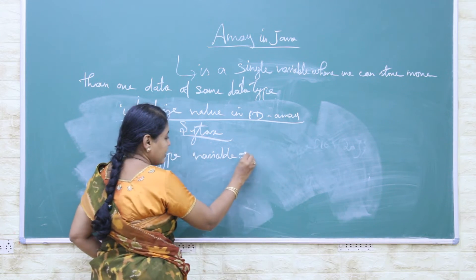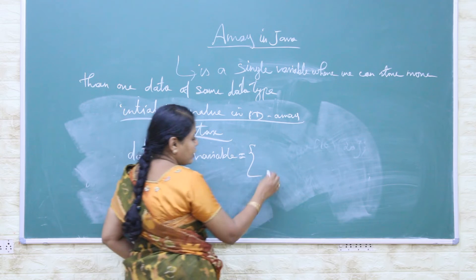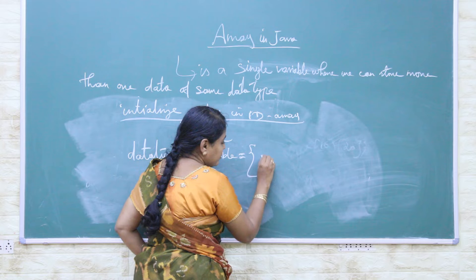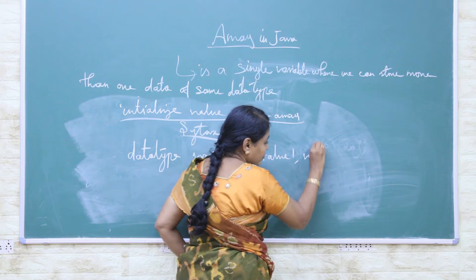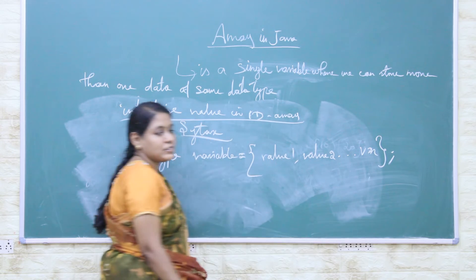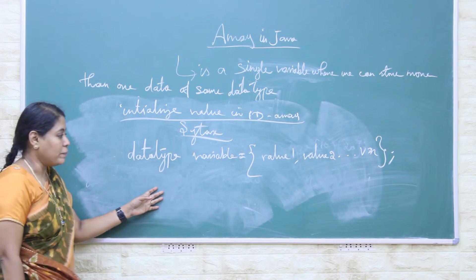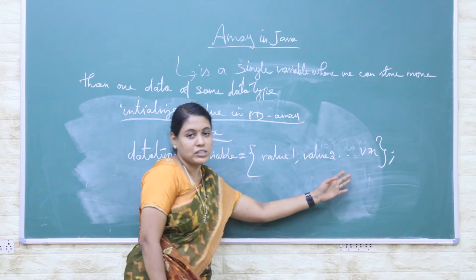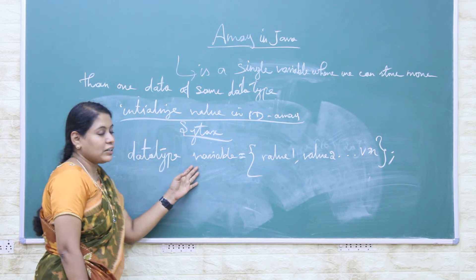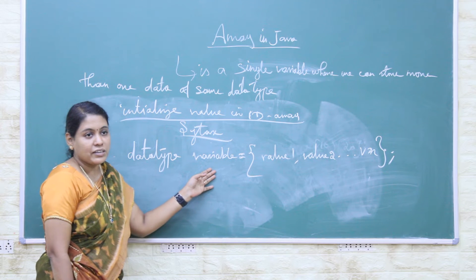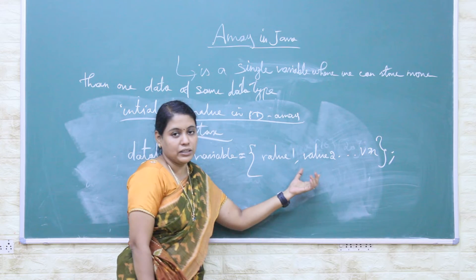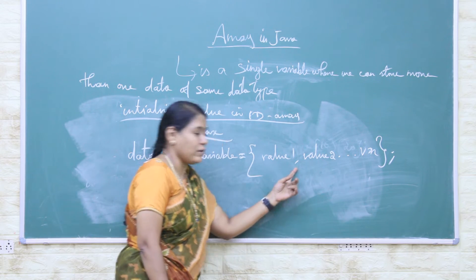We have to assign the values to that one-dimensional variable within curly braces — value1, value2, up to valueN. Close the curly braces and the array declaration must end with a semicolon. The values 1, 2, 3, etc. are the data items initialized to that variable name when you declare this array. So initialization can be done in the declaration part. More than one data item in the initialization part is separated by a comma.